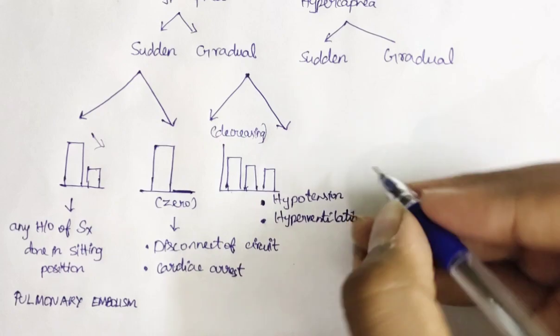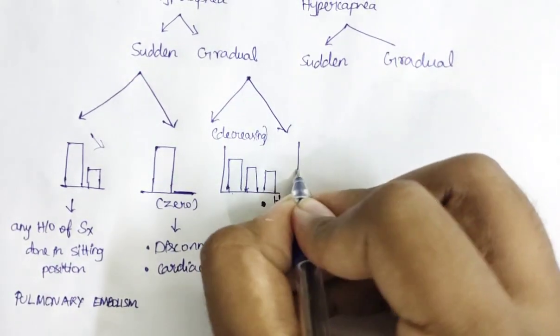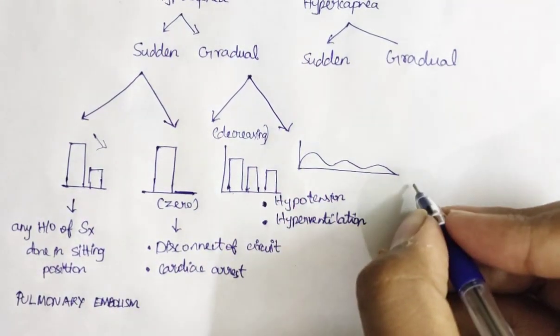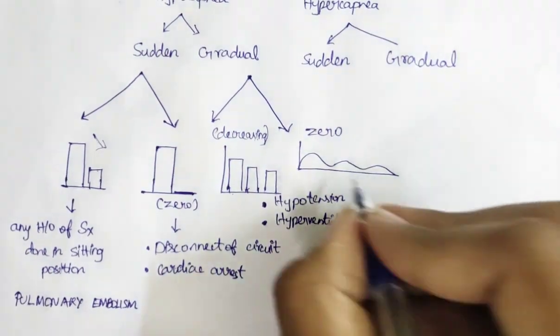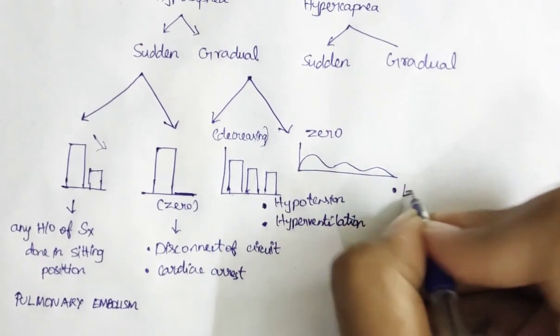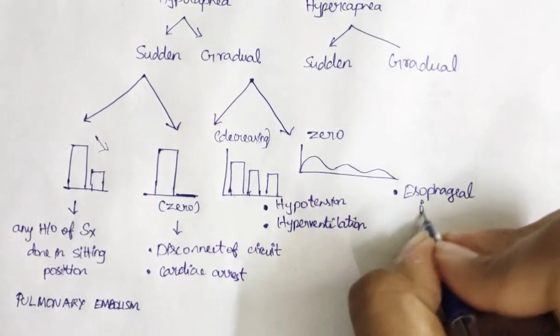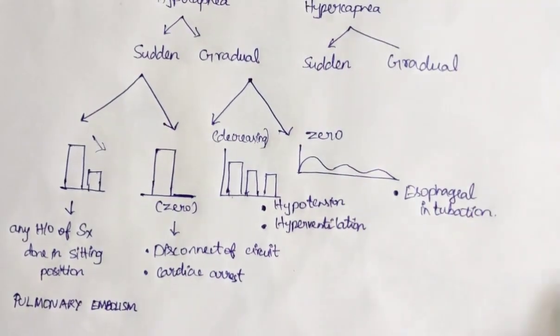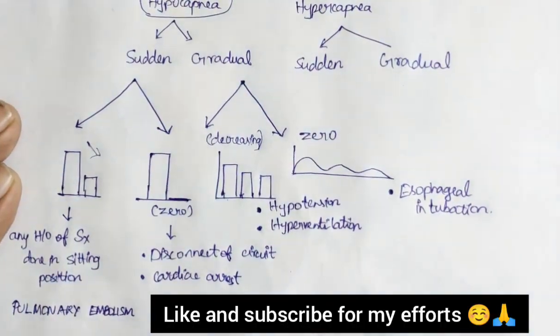Next is gradually it becomes zero. What can be the reason for this diagram? It's a wrong intubation: esophageal intubation. We have completed hypocapnia, four possibilities in a single go.